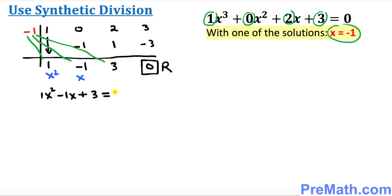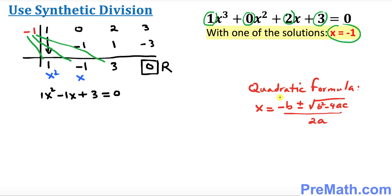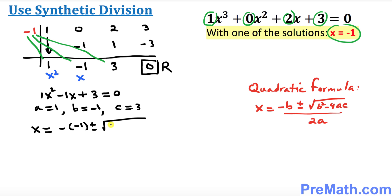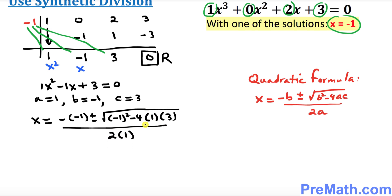So our result is x² minus x plus 3 equals 0. Now we're going to use the quadratic formula to solve this. In this equation, a equals 1, b equals negative 1, and c equals 3. Plugging into the formula: x equals negative times negative 1, plus or minus the square root of negative 1 squared minus 4 times 1 times 3, all divided by 2 times 1.